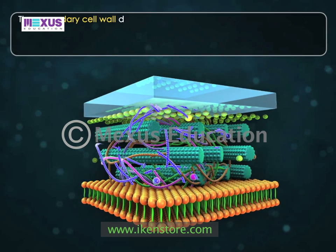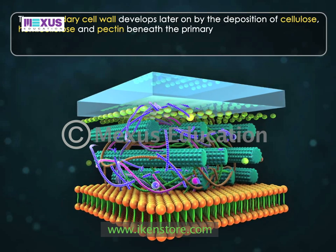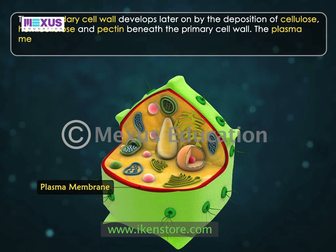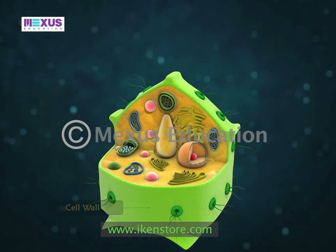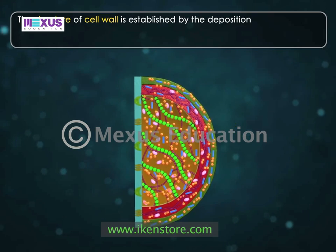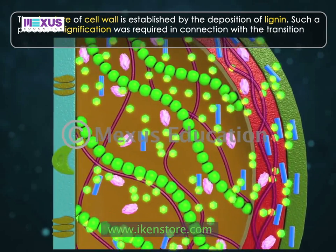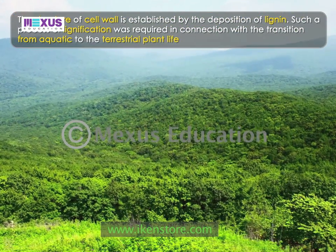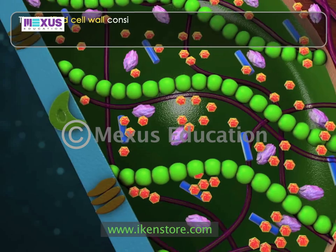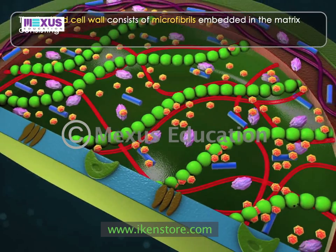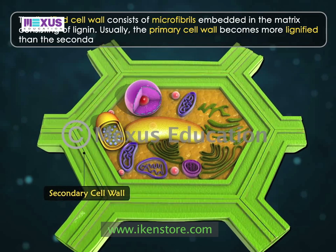The formation of the middle lamella is also accompanied by large vesicles known as phragmosomes and the vesicles of Golgi apparatus, which provide non-cellulose material. Then the fibrils of cellulose are deposited on both sides of the middle lamella to form the primary cell wall. The secondary cell wall develops later by the deposition of cellulose, hemicellulose, and pectin beneath the primary cell wall. The plasma membrane is formed by the Golgi apparatus beneath the primary cell wall. The structure of the cell wall is further established by the deposition of lignin, a process required for the transition from aquatic to terrestrial plant life during plant evolution. Usually, the primary cell wall becomes more lignified than the secondary cell wall.